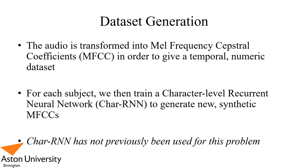How do we generate the datasets? We transform the audio into its Mel Frequency Cepstral Coefficients, MFCCs, which gives a temporal numeric dataset for each subject. We then train a character level recurrent neural network, the char-RNN, to generate new synthetic MFCCs — the CSV goes in, data comes out. We benchmark this because character level RNNs tend to be used for natural language processing and generation of new text, especially with the little Shakespeare example, but it has not previously been used for generating MFCCs or human speech. This is an entirely new exploration.